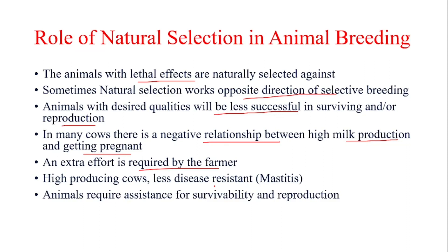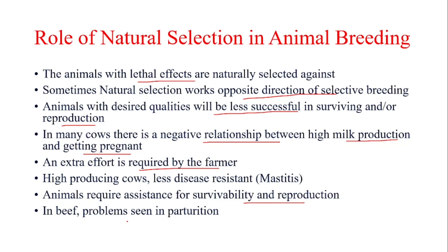In most cases, animals selected for better production require assistance for survivability and reproduction, and this assistance is provided by farmers and veterinarians. For example, beef cattle commonly have a problem giving birth due to the large size of the fetus, and human assistance is required at that time. If assistance is not provided, both the cow and the calf can die. This concludes the lecture on the role of natural selection in animal breeding. Thank you very much.